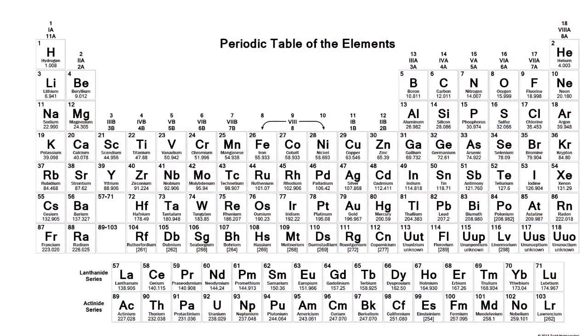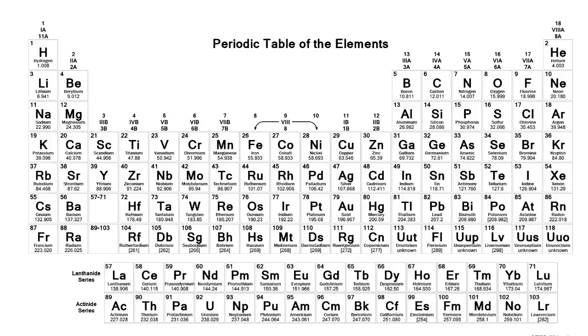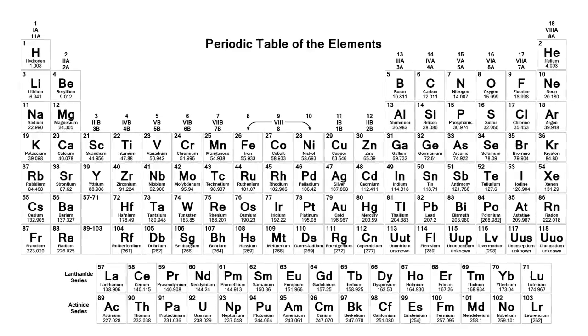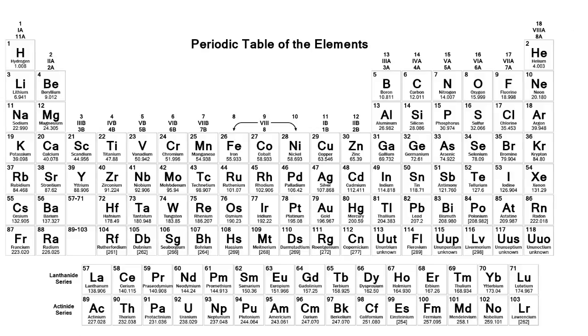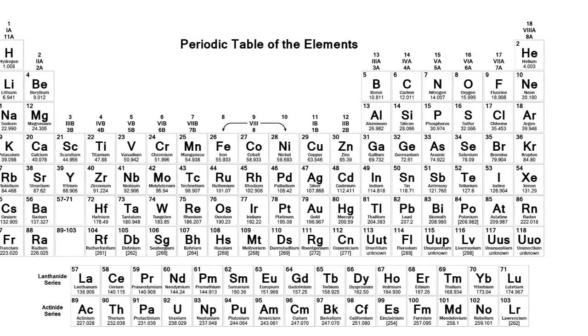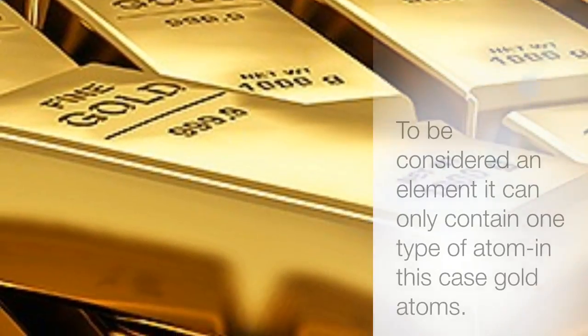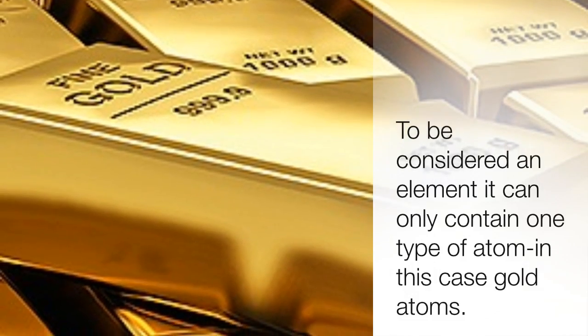All the known elements of the universe are represented on the periodic table of elements. In order for something to be considered an element, it can contain only one type of atom. For example, a piece of gold can only be considered elemental gold if it contains nothing but gold atoms.